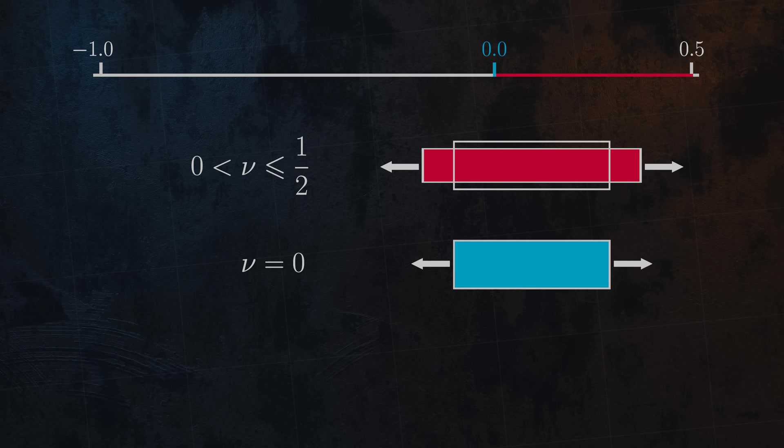Materials with a Poisson's ratio of 0 are interesting. When a longitudinal tensile force is applied, there is no deformation in the lateral directions. One material that behaves in this way is cork, which has Poisson's ratio close to 0. This property makes it a very useful material for certain applications.